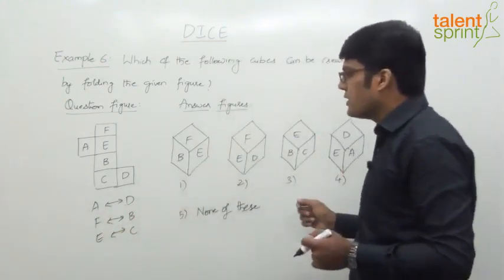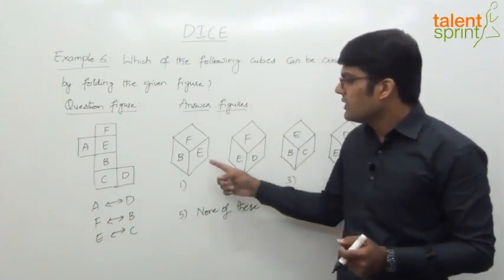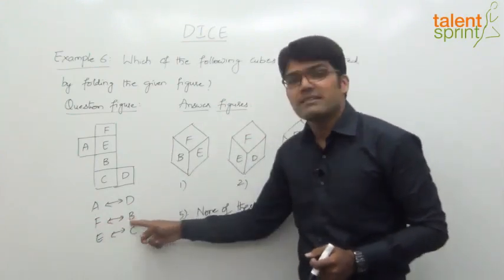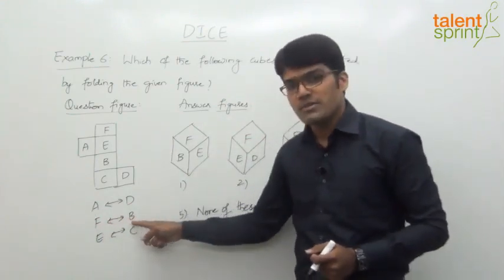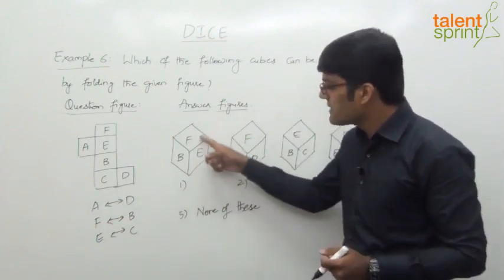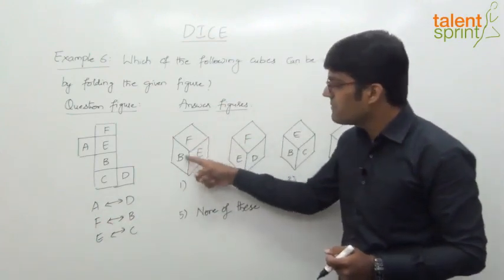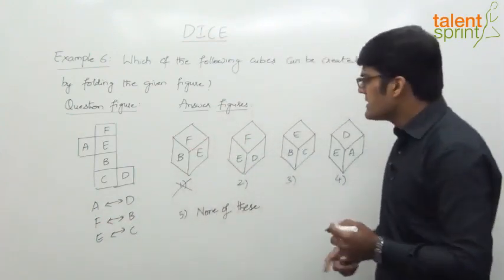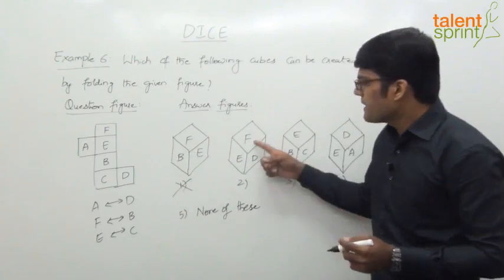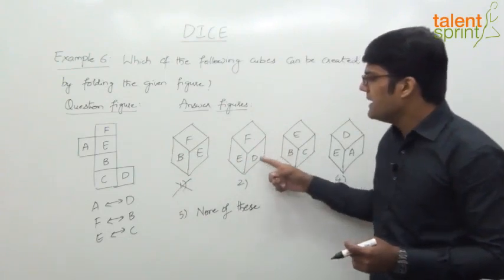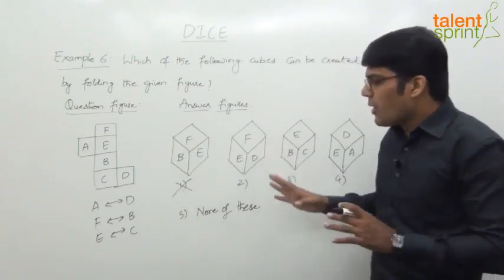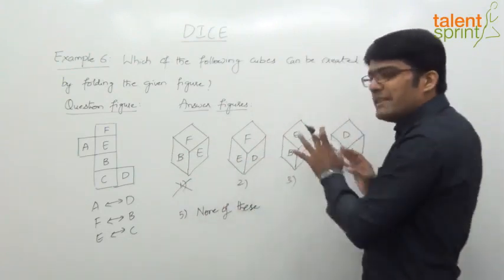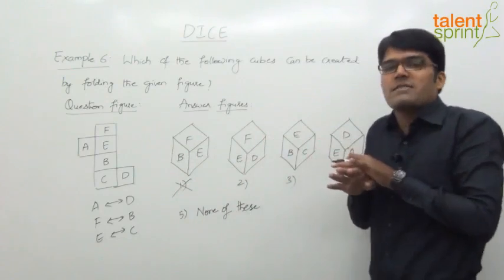Now let's check the answer figures. If you look at the first figure, you know that F and D are opposite, but here F and B are shown as adjacent. So that is wrong. Looking at the second figure — F, E, D — whatever we see in the figures are all adjacent faces, so their opposites should not appear together.